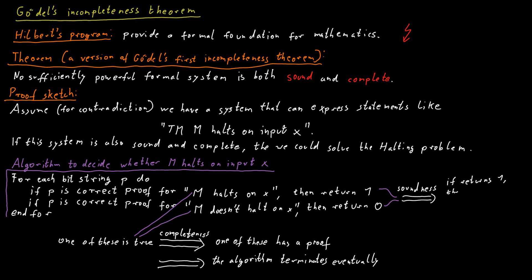So when we return yes or 1, then it really means that the statement M halts on X has a proof and therefore is true. That's what soundness means. If something has a proof, it must be true. And if we return 0 or no, then M does indeed not halt on X because that is a statement that has a proof and therefore the statement has to be true.